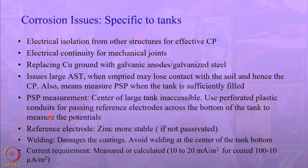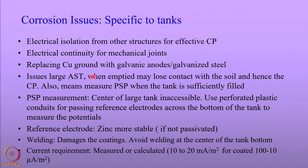Let us look at the specific issues applicable to storage tanks. Storage tanks have inlets and outlet pipelines through which process liquids are stored or removed. These pipelines must be electrically isolated, or if they cannot be isolated, we need to look at the tank as a composite structure when designing the cathodic protection system. When you have tanks, they would have mechanical joints, and it is necessary to ensure that these mechanical joints are electrically continuous so that the current will flow into the structures.